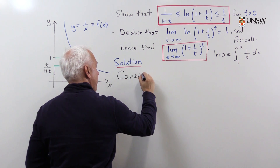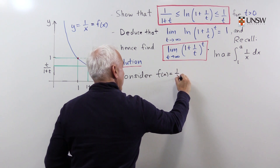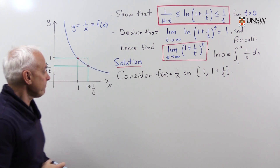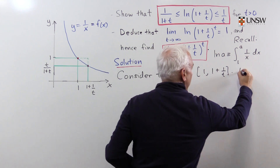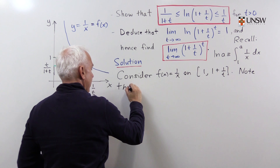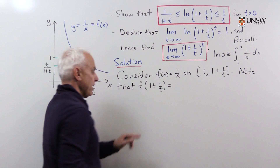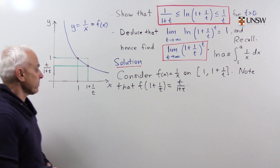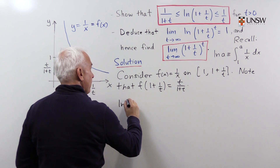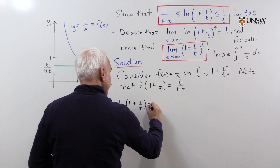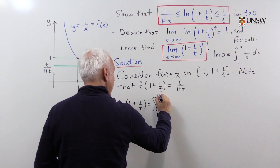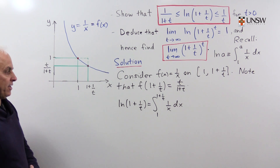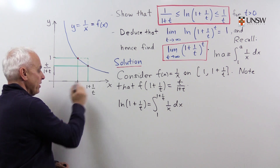Let's consider the function f of x equals 1 over x on the interval between 1 and 1 plus 1 over t — this interval right here. We'll note first of all that f of 1 plus 1 over t is the reciprocal of that, which is t over 1 plus t — this value over here. So log of 1 plus 1 over t is the integral from 1 to 1 plus 1 over t of 1 over x dx, by the definition of log of 1 plus 1 over t. It's the area under 1 over x from 1 to 1 plus 1 over t.